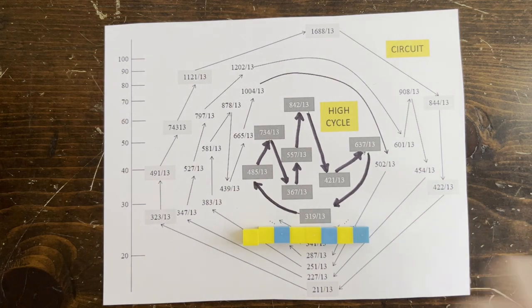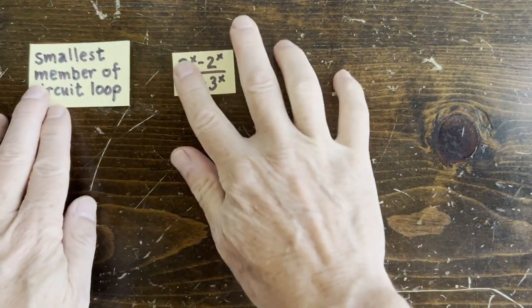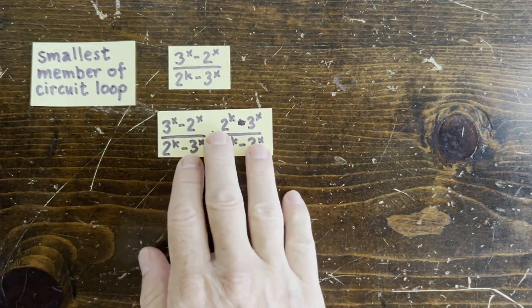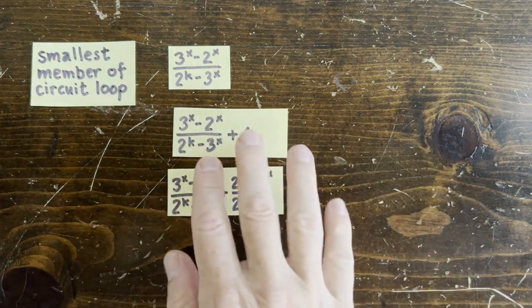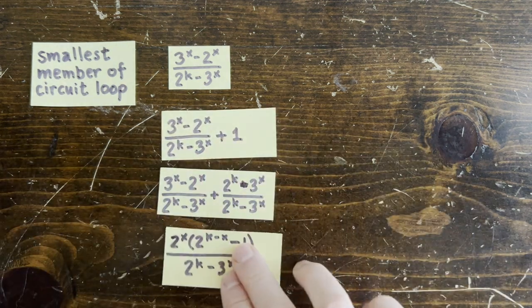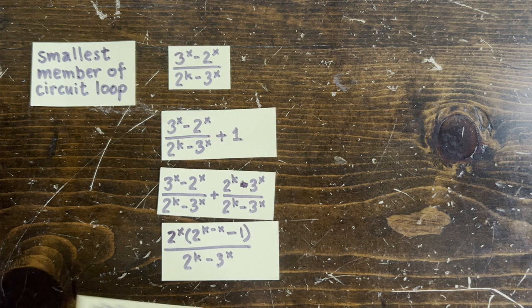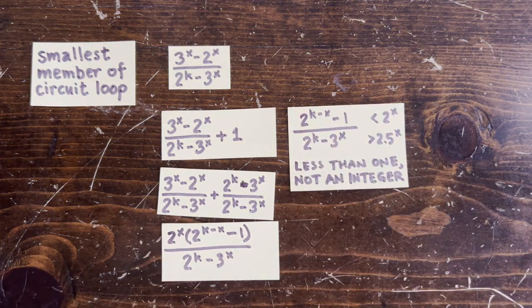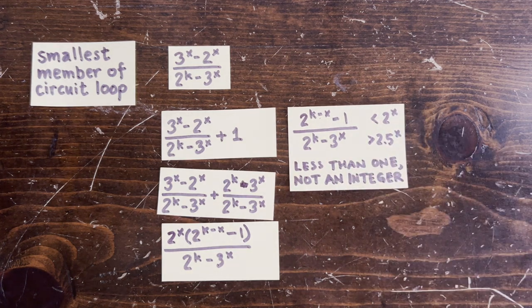First, let's remember how we dealt with circuit loops. The smallest member of the circuit loop has a very special form. If that were an integer, then a simplified version would also be an integer, because the denominator doesn't have any factors of 2 — it's odd. Then we showed that the numerator grows less than 2 to the x, while the denominator grows more than 2.5 to the x. So this is going to be less than 1, and it can't be an integer.